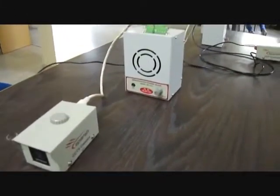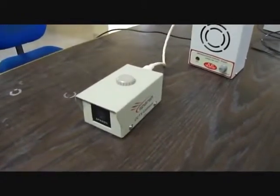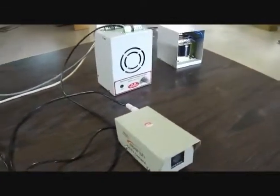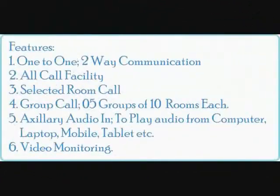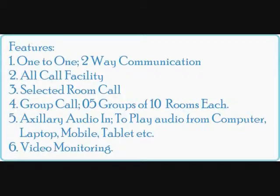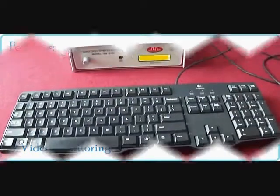I've connected two similar slave units on my test bench along with CCTV cameras. Now we will start communication with these two slave units to demonstrate the various available features. We have six different methods to communicate: one-to-one two-way communication, all call, selected room call, group call, auxiliary audio in, and video monitoring with auto-scroll and pause feature.